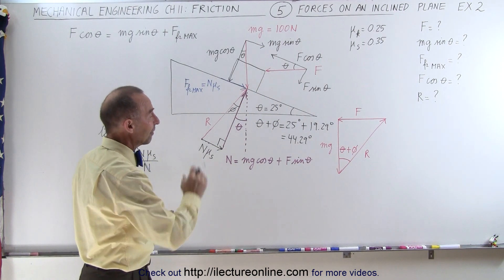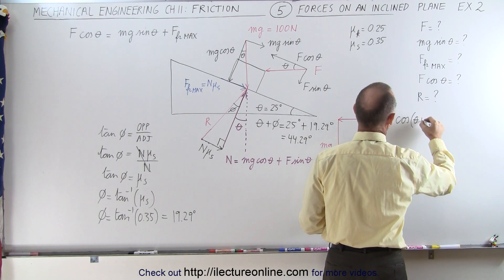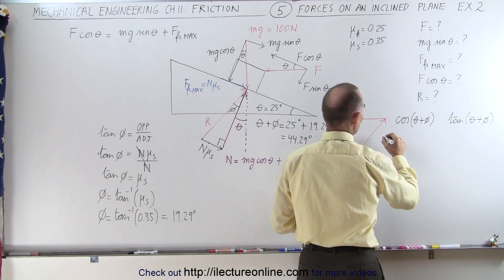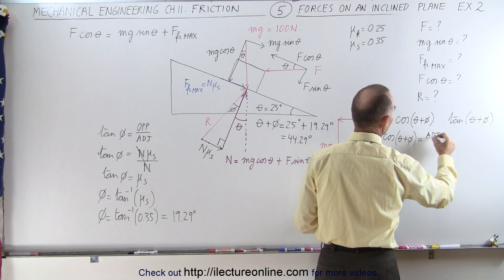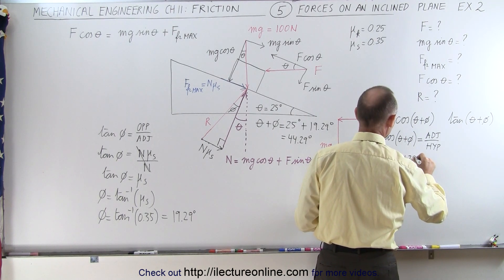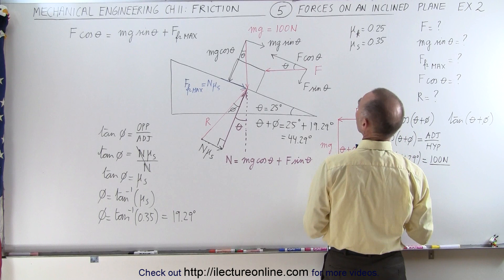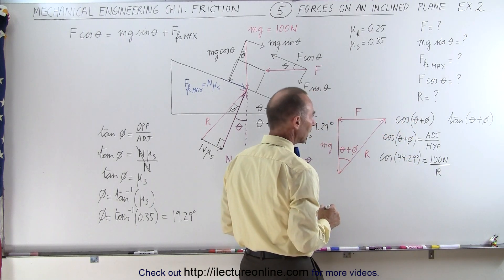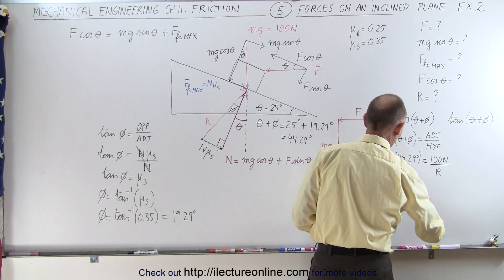Now we can very easily find F and R. We can use the cosine of theta plus phi and the tangent of theta plus phi. The cosine of theta plus phi by definition equals the adjacent side divided by the hypotenuse, so the cosine of 44.29 degrees equals mg — that's 100 newtons — divided by the hypotenuse R. This means R equals 100 newtons divided by the cosine of 44.29 degrees.